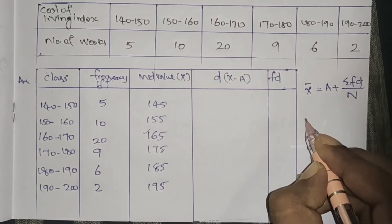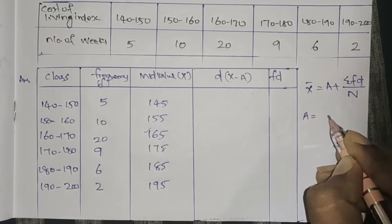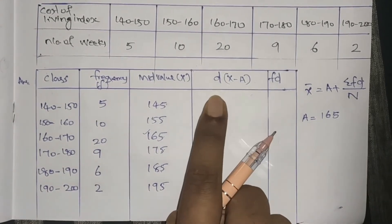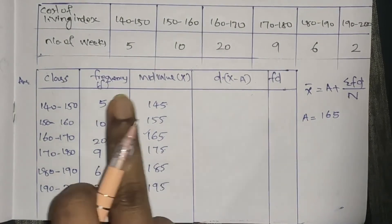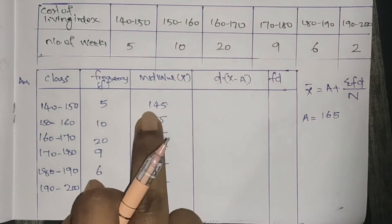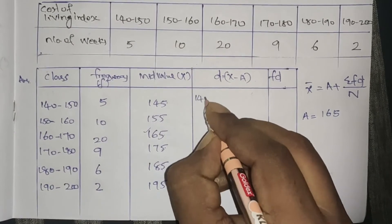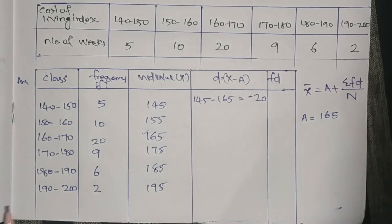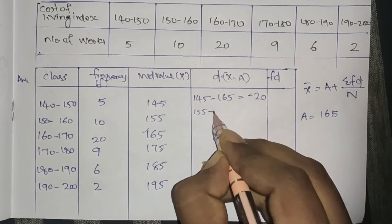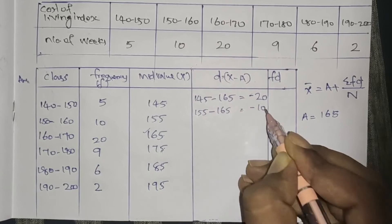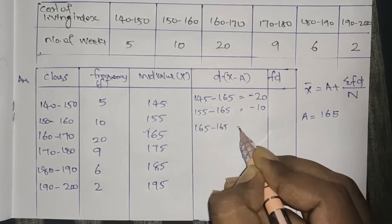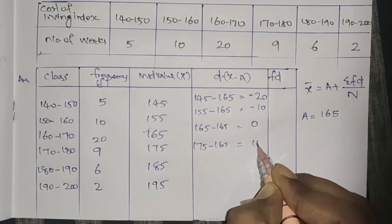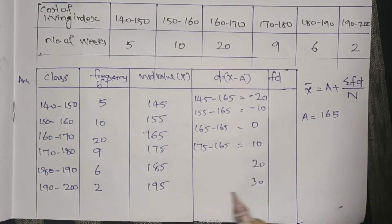We assume A equals 165. Now we identify d, which equals x minus A. So: 145 minus 165 equals minus 20; 155 minus 165 equals minus 10; 165 minus 165 equals 0; 175 minus 165 equals 10; then 20 and 30.